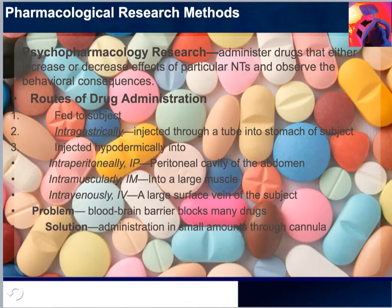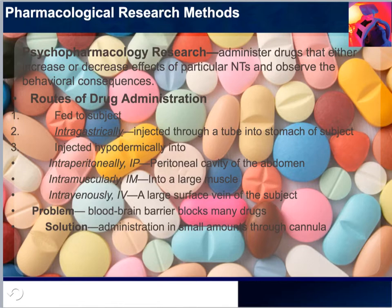There are many selective neurotoxins. For example, when either kainic acid or ibotenic acid is administered by microinjection, it is preferentially taken up by cell bodies at the tip of the cannula and destroys those neurons, while leaving neurons with axons passing through the area largely unscathed.